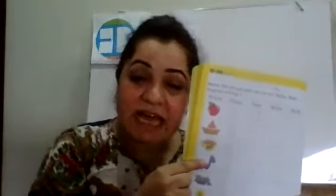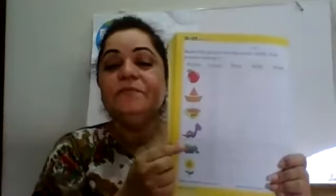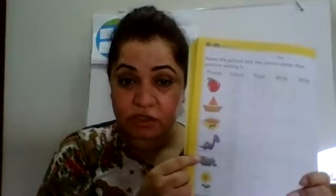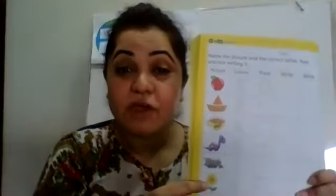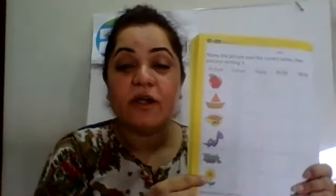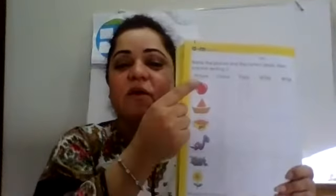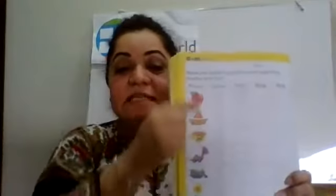Dino starts with D. Engine starts with E. Flower starts with F. So A, B, C, D, E, F — these are the initial letters of each word. Great, you can recognize all the pictures!